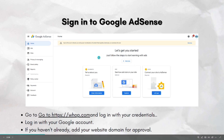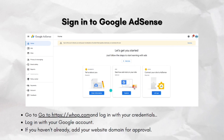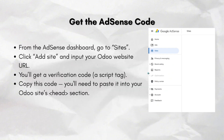As you can see, this is how it looks like on the website. Now after that, you just have to get the AdSense code. From the AdSense dashboard, go to Sites — which is right here — and then click Add Site. After that, you just have to input your Odoo website URL. You will then get a verification code, which is a script tag. Copy the code, as you will need to paste it in your Odoo site.